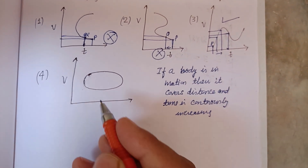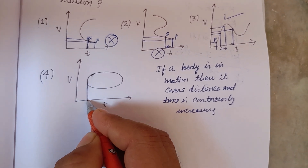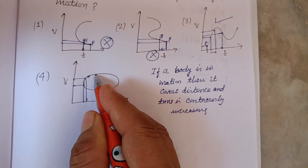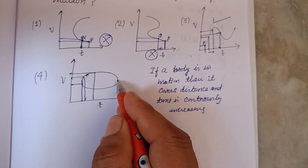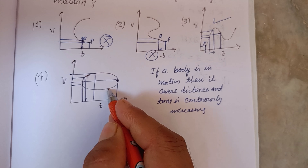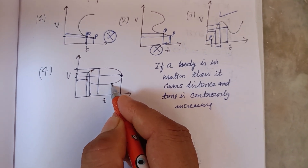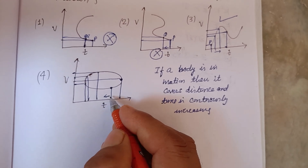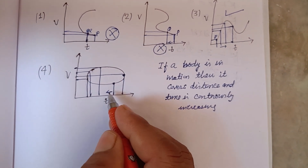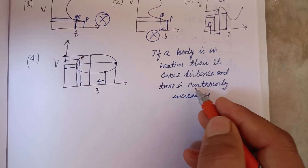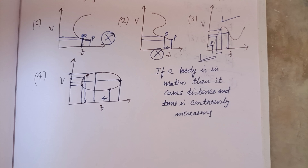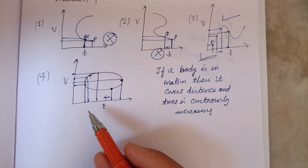In the fourth graph, as the particle moves through various points, time is decreasing at each point — time is not constantly increasing. Since time must always be increasing for realistic motion, this graph is not correct. Therefore, in graphs 1, 2, and 4, time is decreasing, which is not a realistic condition of motion.